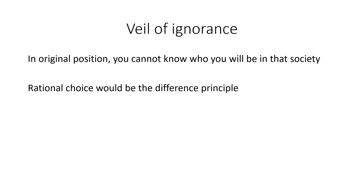That's why Rawls says the rational choice would be the difference principle. If you end up as one of the best-off people, all the life chances have gone your way and you get the least amount of goods — but you're doing okay because you're already in a good position. Whereas if you end up unlucky in a bad position, lots of the goods in society will go your way and you'll end up all right. Someone might want to gamble and put all the goods in one area hoping they land there, but Rawls says that's not rational — that's being a high-stakes gambler. Rational people would apply the difference principle.